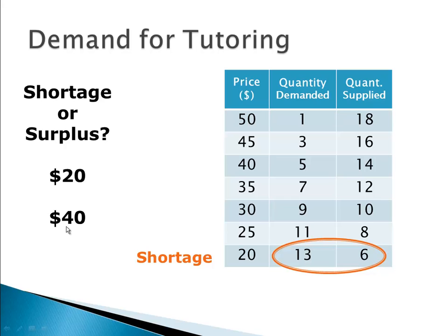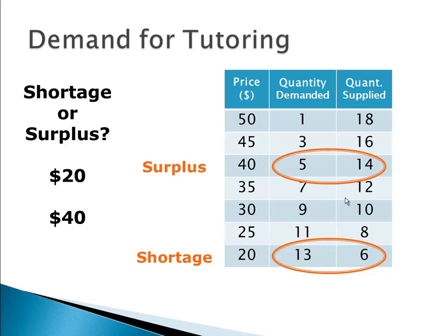When the price is $40, demand is going to go down but supply is going to go up, because people don't want to pay more. At $40, we've got a quantity demanded of only five hours, but there are tutors willing to give 14 hours. That means about nine hours extra — that's called a surplus. Nine hours just sitting on the shelf, tutors waiting around willing to tutor, but at $40 there won't be that many people willing to pay for tutoring.